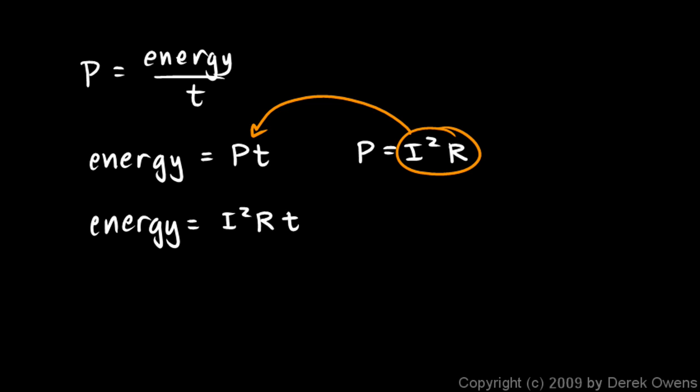And since this energy all becomes heat, it's commonly written like this. Q is I squared Rt, where we use Q for heat. You remember in an earlier chapter when we dealt with heat, we used Q for heat. And think of Q as quantity, the quantity of heat.